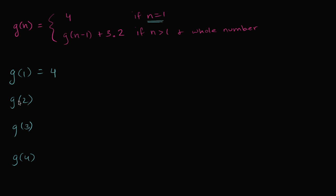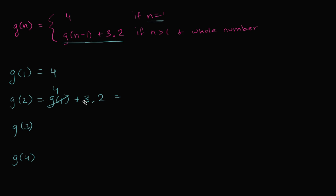So that was pretty straightforward. Now g of two — if n is equal to two, two is greater than one and it's a whole number, so we would use this case. This is interesting because it's defined in terms of the function, but not g of n — it's g of n minus one. So if n is two, this is going to be g of two minus one, or g of one plus 3.2. Well g of one we know is equal to four, so four plus 3.2 is 7.2.